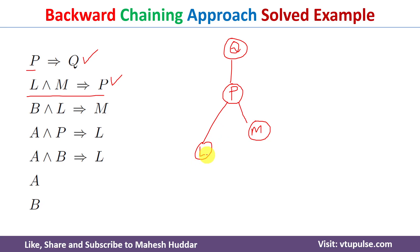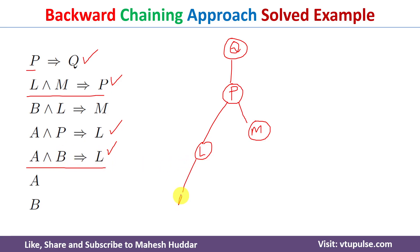What we need to do is select a rule where L is present on the conclusion side. L is present on the conclusion side in a rule: A and B implies L. We select this rule because we know that A is true and B is true, so L will become true. One premise is A and another is B. Since A and B are true, L is also true.